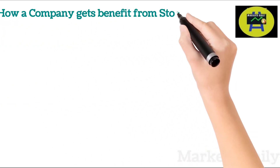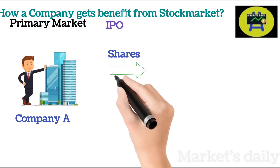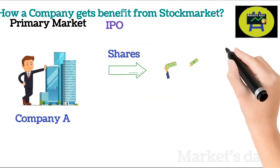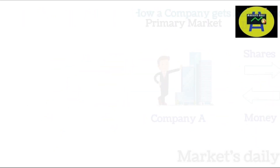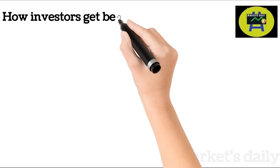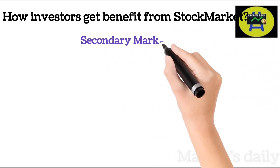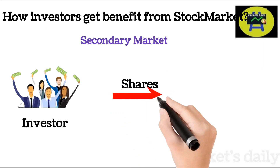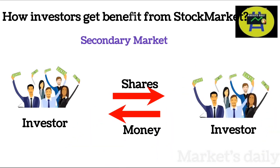How is a company benefited from the stock market? In the primary market, the company issues shares through an IPO — that is, an Initial Public Offering — and gets money from the public or investors. How are investors benefited? In the secondary market, for example the NSE or BSE, investors sell shares to another investor and make profit. Sometimes the company also rewards them through corporate actions such as split, bonus, rights, and dividends.